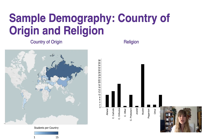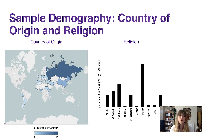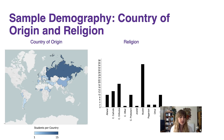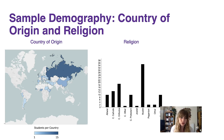Then we can look at the country of origin and the religion of the students. The map on the left shows the country of origin of the students within the sample, with locations indicated in blue. We've got students from across the globe — from all different continents, from South America, Africa, Europe and Asia. The intensity of the blue colour indicates the frequency of students, so darker blue means higher frequency. As you can see, we've got the highest frequency of students from Russia, followed by China, and then some other countries.